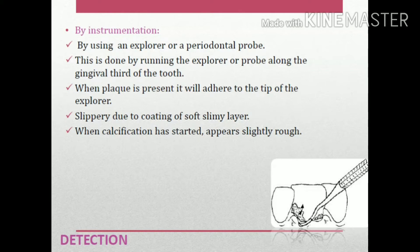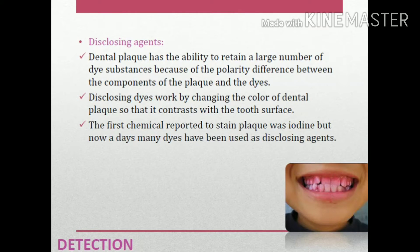Another detection method is using disclosing agents. Dental plaque has the ability to retain a large number of dyes due to polarity differences between plaque components and the dyes. Disclosing agents work by changing the color of dental plaque so it contrasts with the tooth surface. The first chemical reported to stain plaque was iodine, but nowadays many dyes are used as disclosing agents.